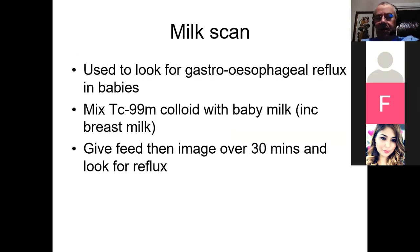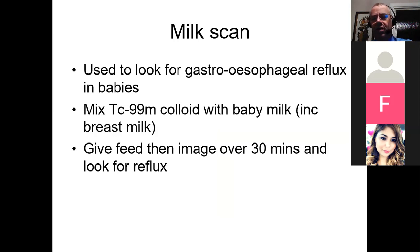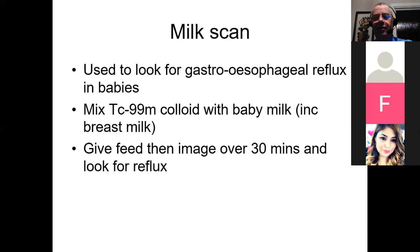Now let's go to something that definitely only occurs in pediatric patients: the milk scan. This is to look for gastroesophageal reflux in babies. There are different levels of reflux — some will just cause distress post-feed due to esophagitis, but if it's significant you can get aspiration and then aspiration pneumonia. The way you do this is to feed the baby. We can't inject the mother with colloid to get breast milk; you need to express the breast milk, label it, and then feed the baby. You can also use any kind of baby formula appropriate to the child's age. You give a feed and then image over 30 minutes, looking for reflux.